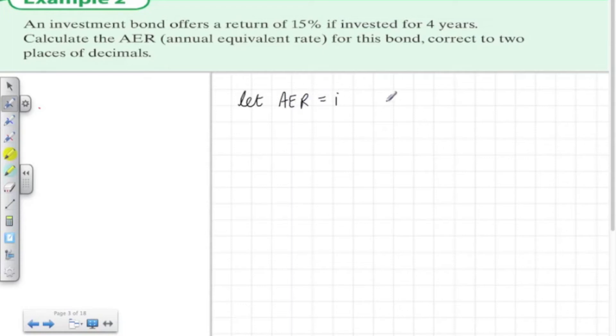We let the annual equivalent rate equal the letter i and the four year rate will represent with the letter r.